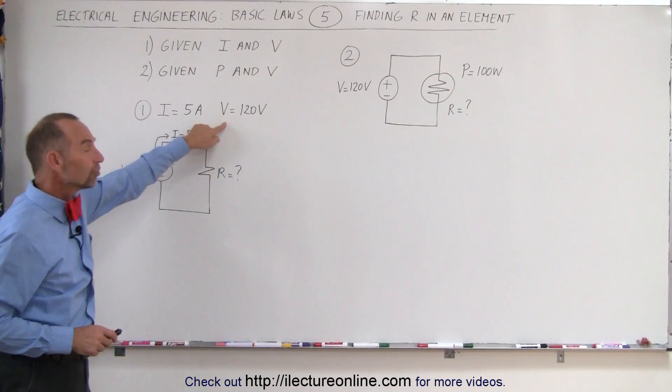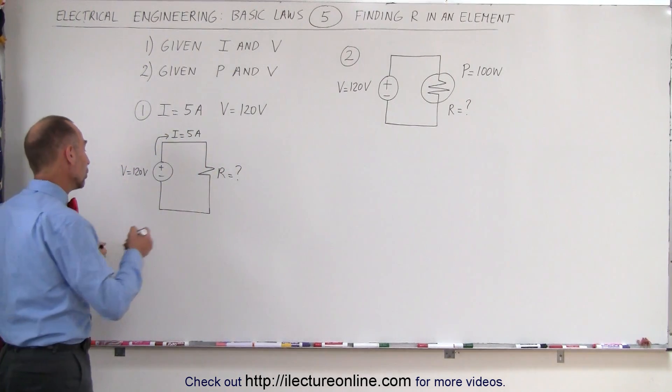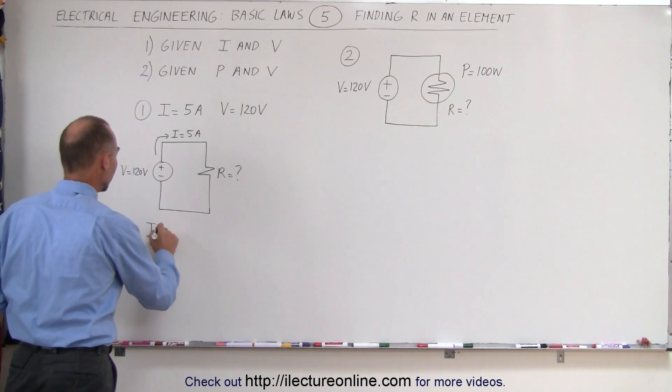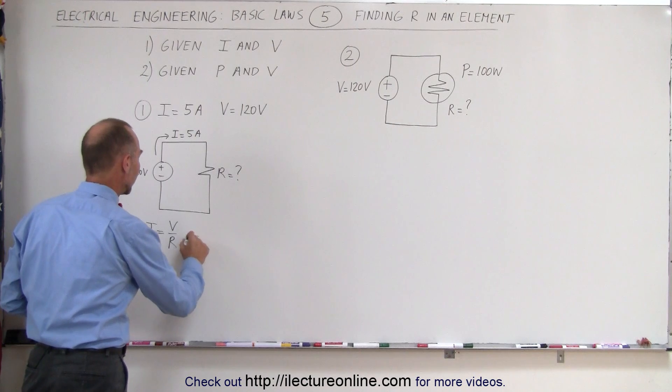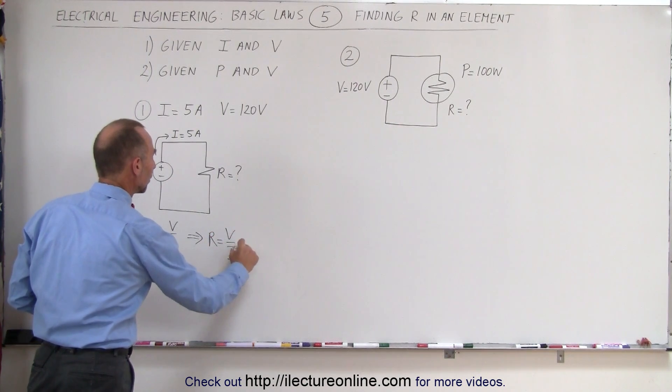Since both the current and the voltage are given, we can find the resistance by simply using Ohm's law. We know that Ohm's law tells us that I equals V divided by R. If we solve that equation for R, we can then say that R equals V divided by I.